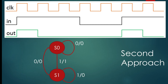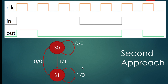Now let us discuss the second approach - this is an FSM-based approach, where FSM means finite state machine. I will draw a finite state machine from the input and expected output. I recommend you prefer a Mealy state machine. For example, if you select a Moore state machine it will have one extra state, requiring two flip-flops, but a Mealy state machine has only two states.